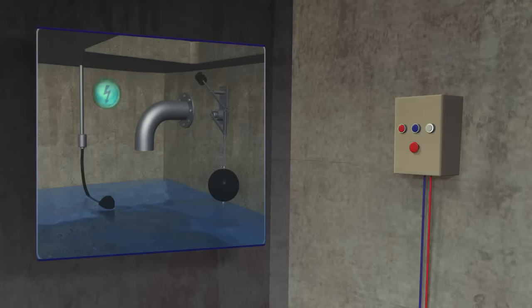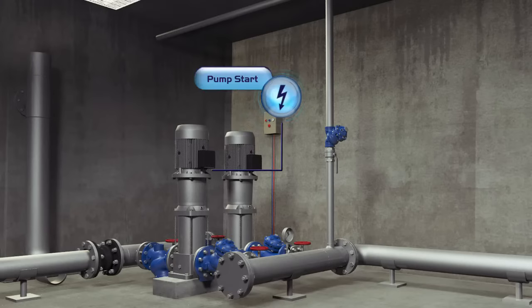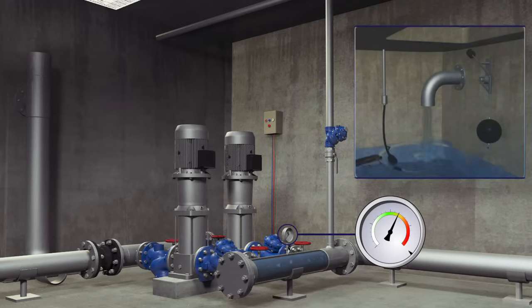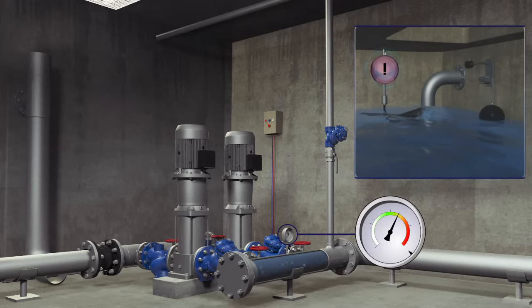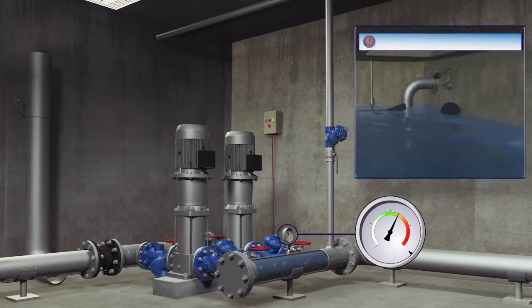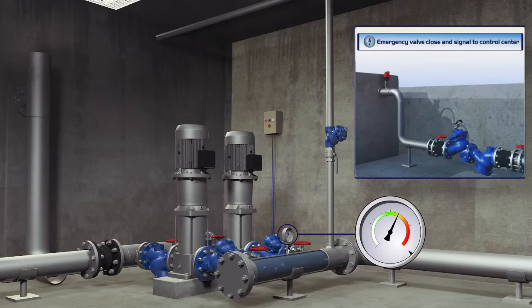The top reservoir is protected from overflowing by the Burmad system. In the event that a foreign object prevents the electrical float from stopping the filling process, the water level would continue to rise. In such a case, Burmad's hydraulic float, installed at a preset emergency level in the top reservoir, is activated and closes a safety valve located at the entry point to the top reservoir.